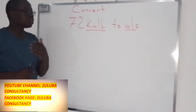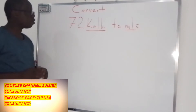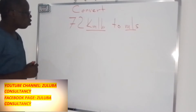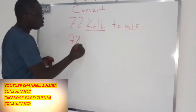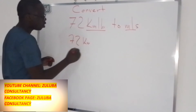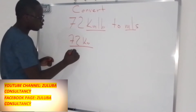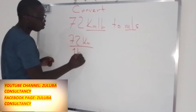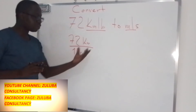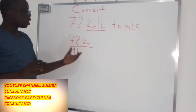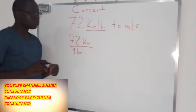So how do you change from kilometers per hour to meters per second? Well, if you have 72 kilometers per hour, it's the same as having 72 kilometers divided by one hour. So if you have this, we can now change the kilometers to meters.